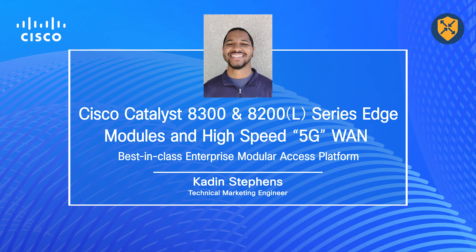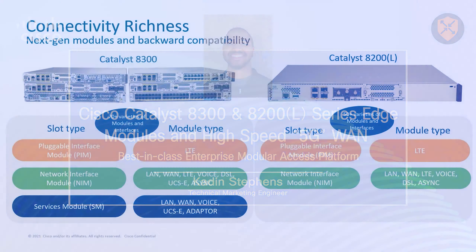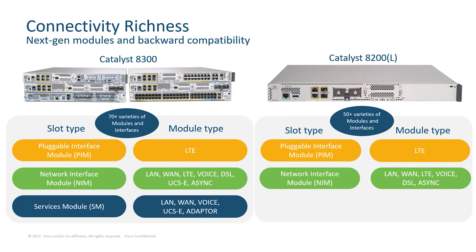5G Cellular WAN is the game-changing technology for multiple branch connectivity use cases today. The Catalyst 8300 and 8200 Series Edge platforms provide richness with various types of modularity and connectivity that they support.